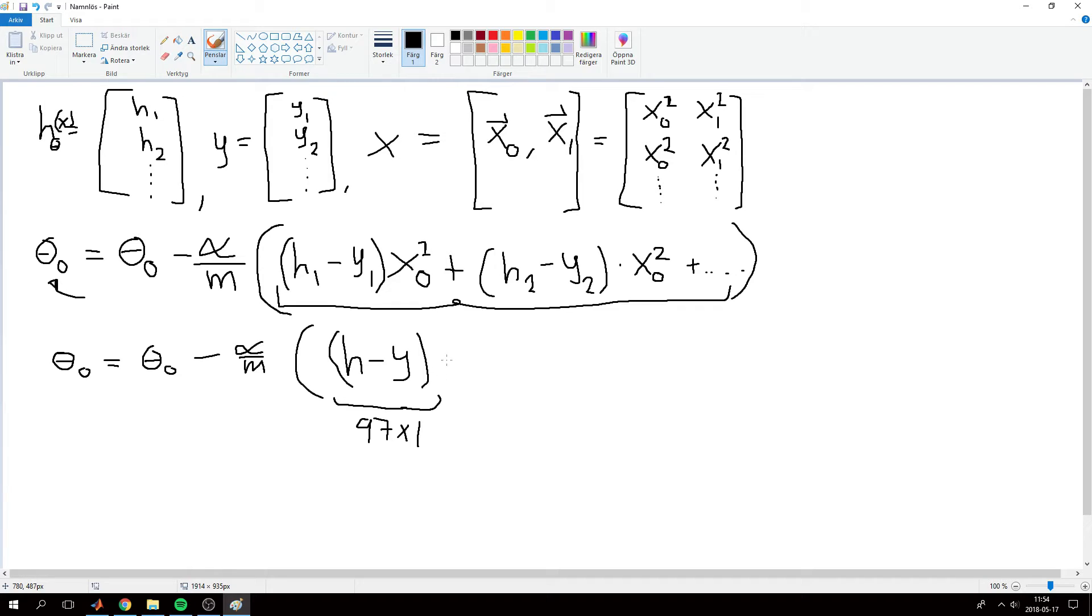This will be a 97 by 1, and then take that matrix multiplication with x feature 0, which will be a 97 by 1 vector. So this won't work since the dimensions don't match.